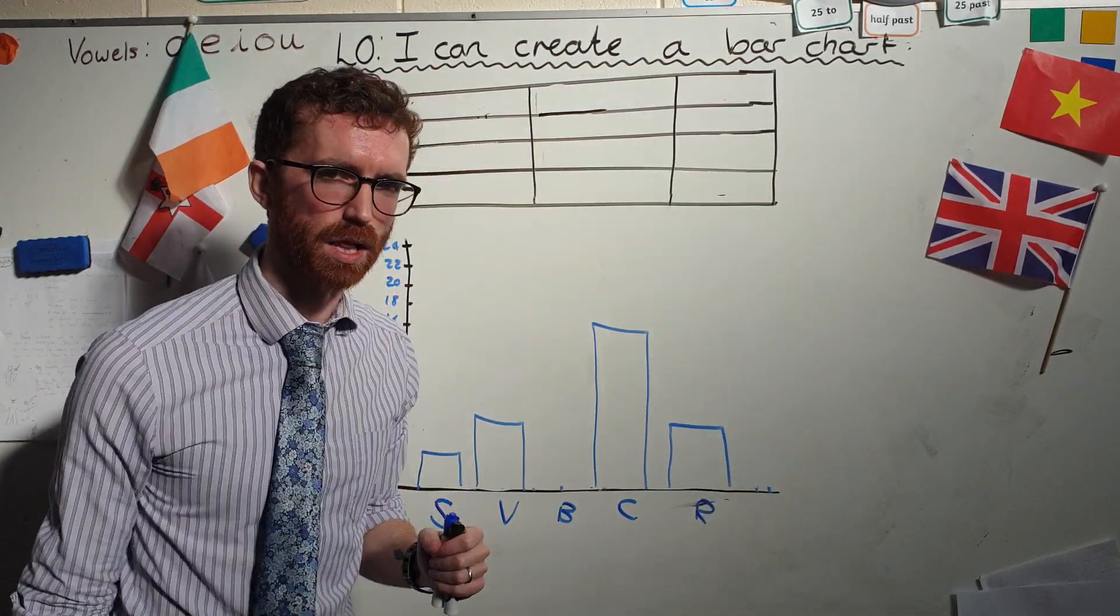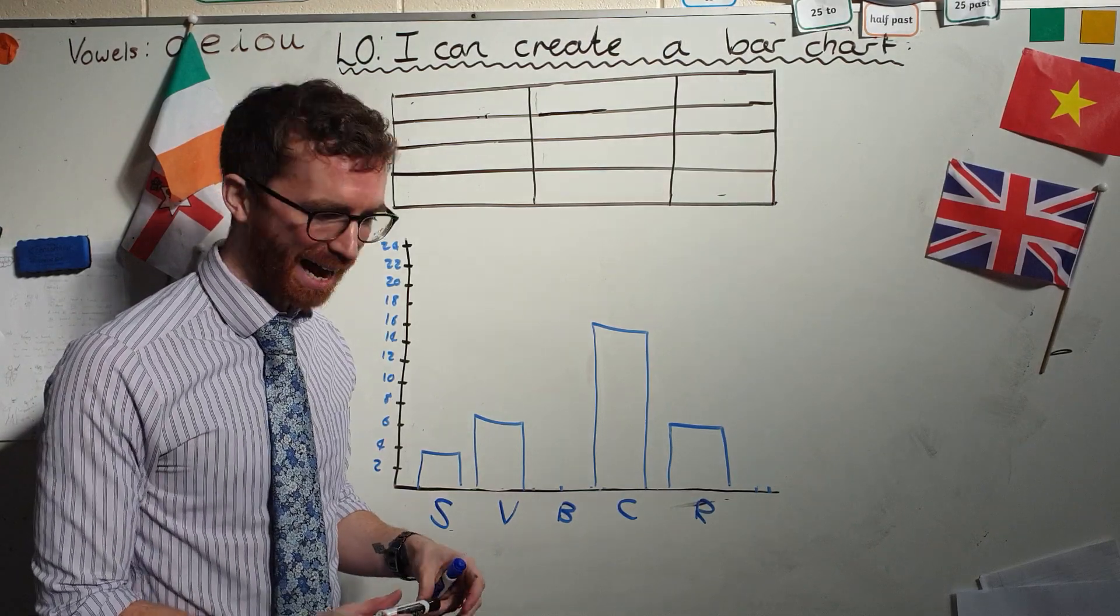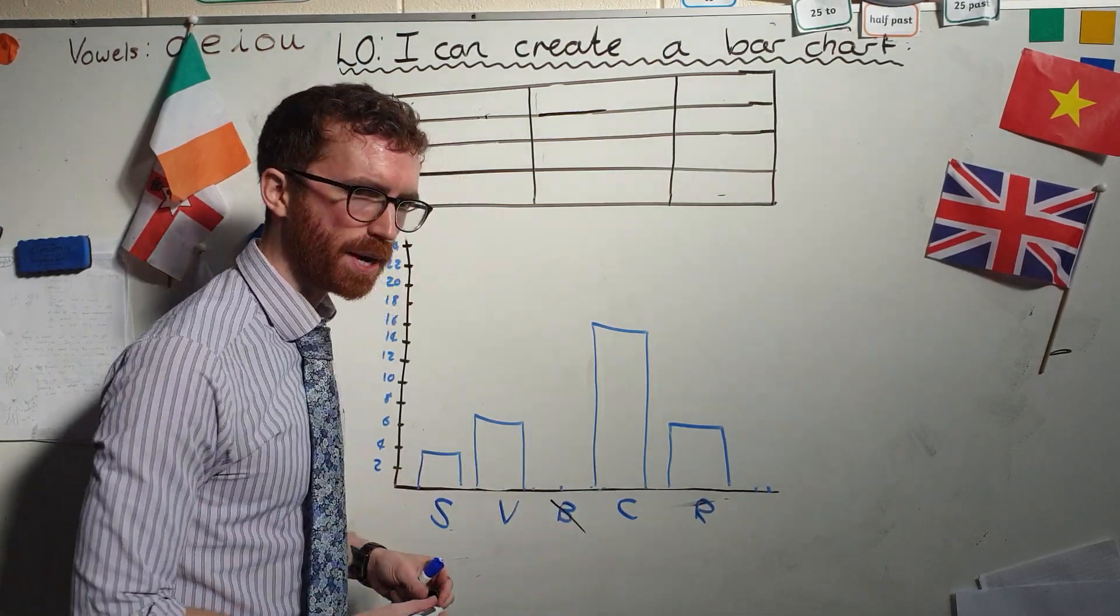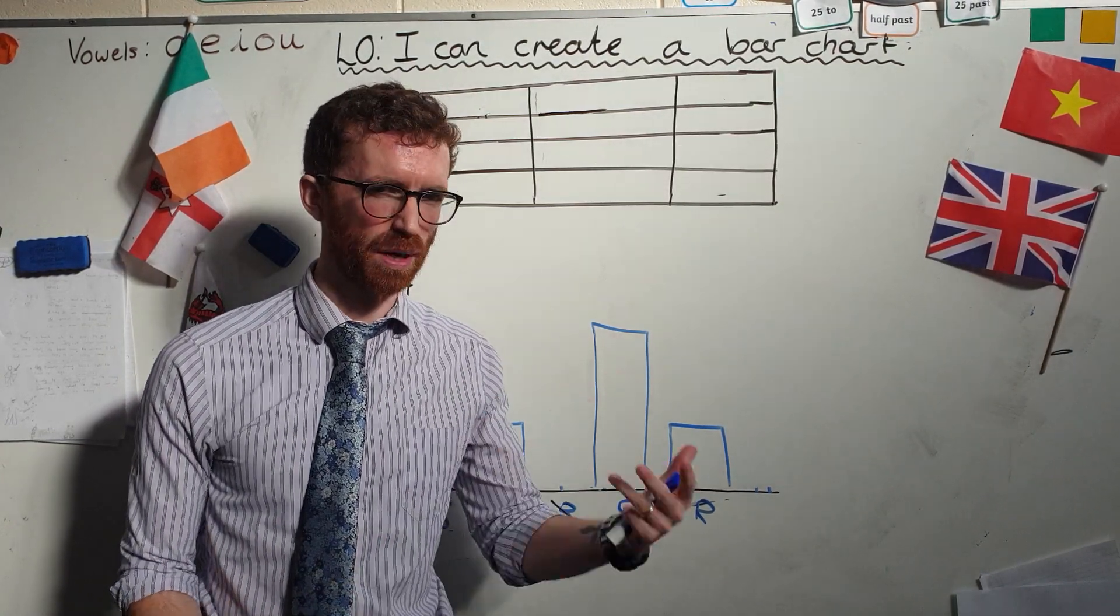Obviously the chocolate is selling well. I'm gonna keep the chocolate in stock. The banana is not selling at all. I'm going to get rid of the banana. There's no point me buying banana ice cream if nobody is going to buy it off me. It's a waste of money.